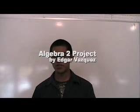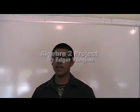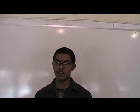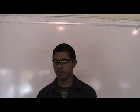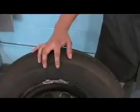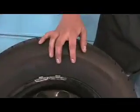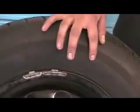This is my algebra 2 project. I am explaining what the numbers on a tire means. The numbers on this tire are P19570R14.